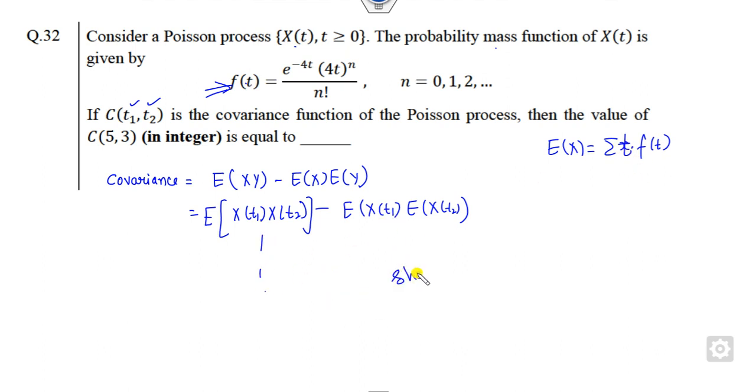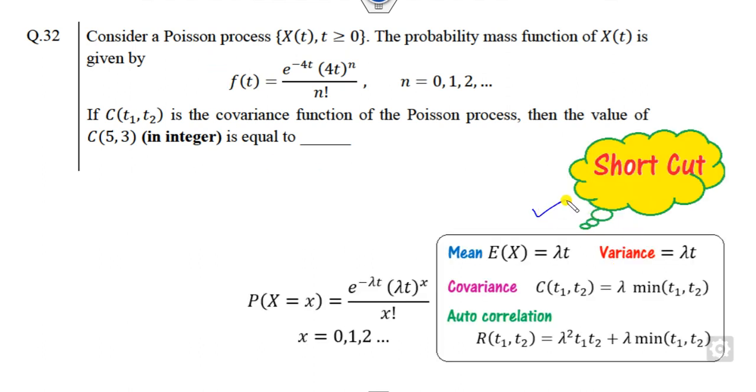But what is the shortcut trick behind this? Whenever there is a Poisson distribution, you can remember this shortcut always. Whenever this is a Poisson distribution of this form, the mean is always λt. The covariance is always given here, and in this case you have to find the covariance. If you find the autocorrelation, it's here.